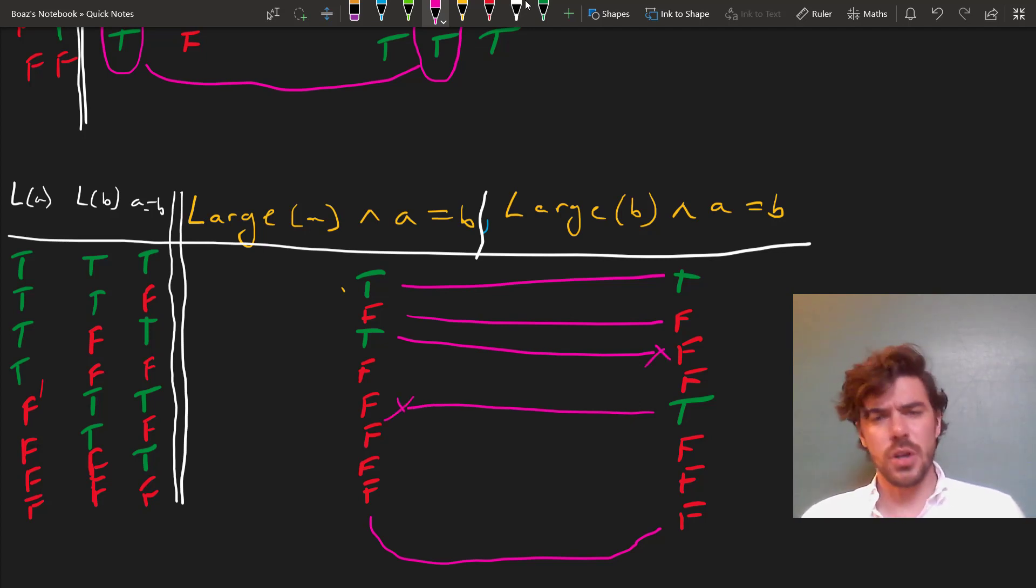Although these sentences are logically equivalent, which is just to say that they have to be true in the same circumstances, because if A equals B and A is large, then B must be large as well, they don't show up in our truth tables.